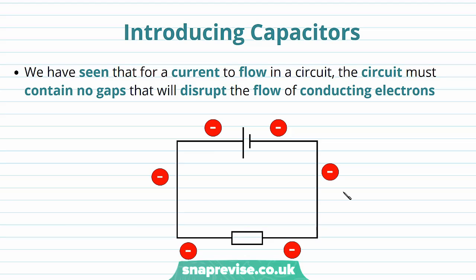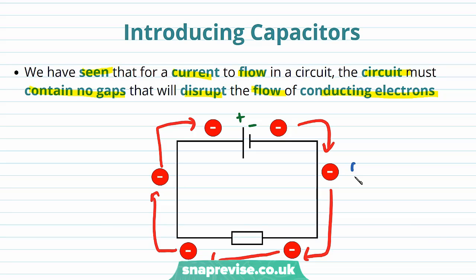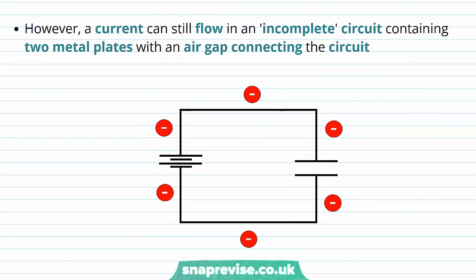In the first part of this video we're going to introduce a new circuit element called a capacitor. We've seen that for a current to flow in a circuit, the circuit must contain no gaps that will disrupt the flow of conducting electrons. However, a current can still flow in an incomplete circuit containing two metal plates with an air gap connecting the circuit.